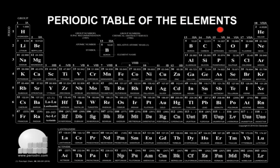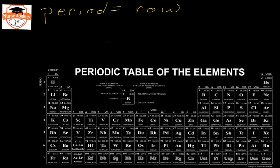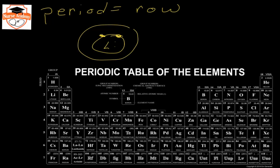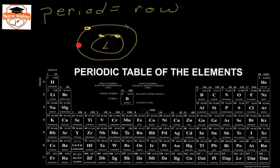The rows are what we call periods — a period equals a row on the periodic table. As you go across a period, each period is going to represent a shell of electrons on an atom. So if we had the element lithium and we looked at it, lithium has three electrons total. In the first shell we would have two electrons, and then in the second shell we would have a third electron. This exactly corresponds to the total number of electrons in the atom, so each period represents a shell on an atom.